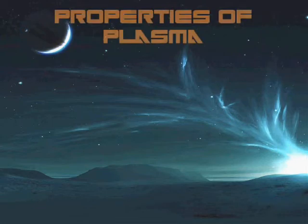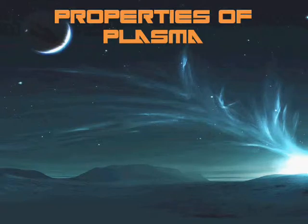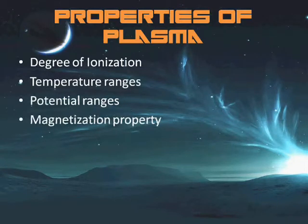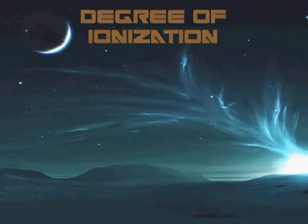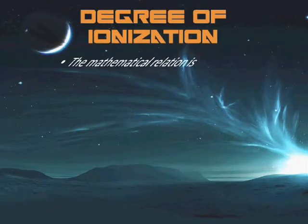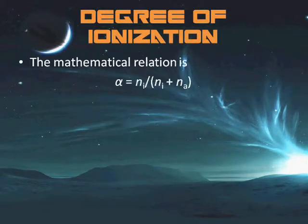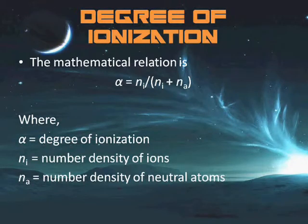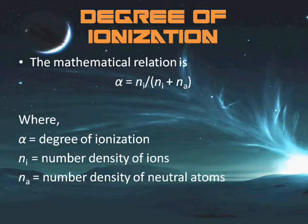There are four main properties which determine the material existence of plasma: the degree of ionization, the temperature ranges, the potential ranges, and the magnetization property. The degree of ionization is the ratio of ion number density to the sum of ion and neutral atom number densities — the proportion of atoms that have lost or gained electrons, mostly controlled by temperature. Even a partially ionized gas with as little as 1% ionized particles can have plasma characteristics, responding to magnetic fields and having high electrical conductivity.